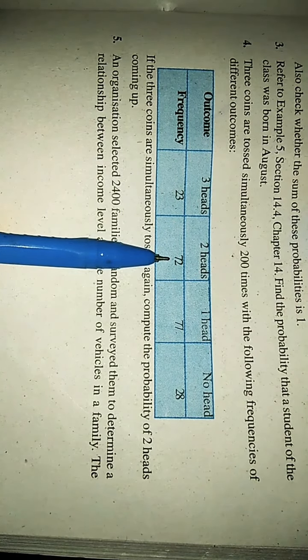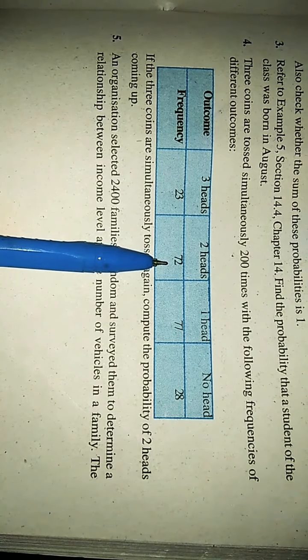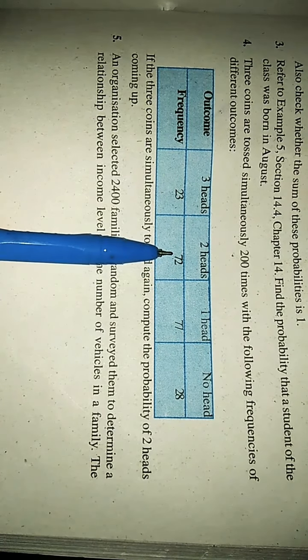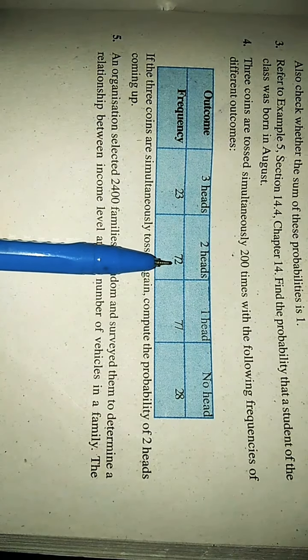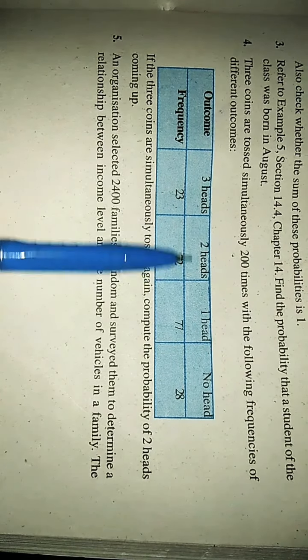For that, we will write formula first. This will be what? This will be number of trials in which event happened. Which event? Event of 2 heads. Let us solve this sum.